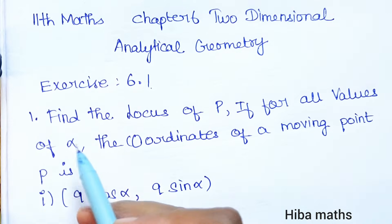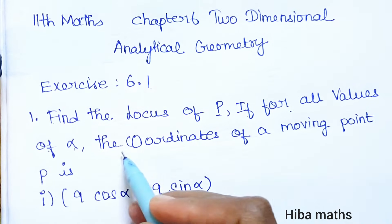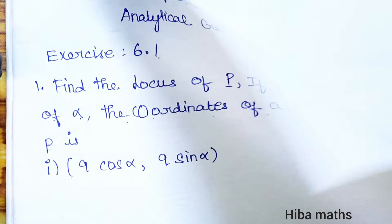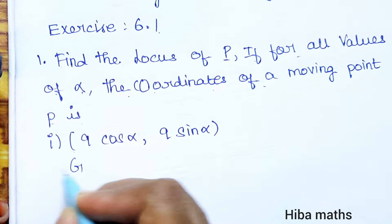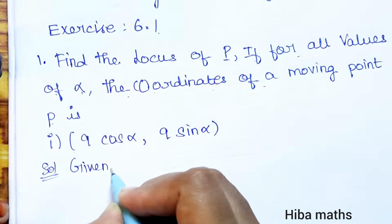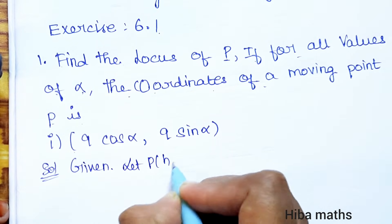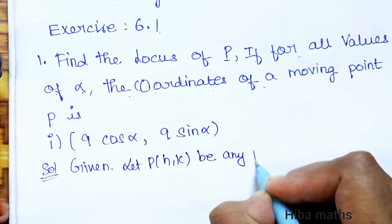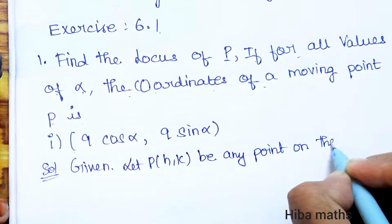If you solve the problem, let's find the locus of P. For all values of alpha, the coordinates of a moving point P are given. Let P(H, K) be any point on the required path.